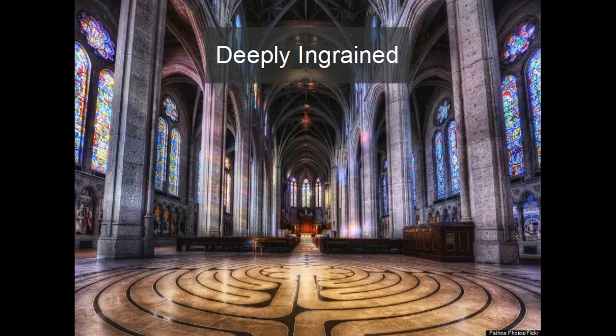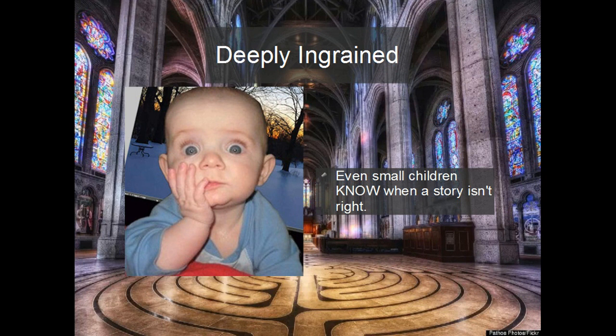In critique, a writer often hears that a story just doesn't work for me. A group of readers will usually agree when a story is somehow wrong. Experiments have shown that even small children just establishing their verbal skills have a sense of when a story is incomplete or wrong. Telling the writer how to fix what is wrong is an entirely different matter and may require a professional. But even novice writers will usually agree when a story hits the mark or not. That's why beta readers are so crucial.